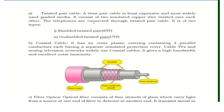In shielded twisted pair, there is a shield outside the copper wire. In unshielded twisted pair, there is no shield. The second type is coaxial cable. It has an outer plastic covering containing two parallel conductors, each having a separate insulated protection cover. Cable TVs and analog television networks use coaxial cables. It provides high bandwidth and excellent noise immunity.